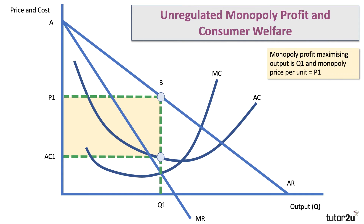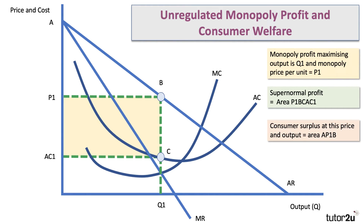Our opening diagram shows a profit-maximising monopolist setting price at P1 with an equilibrium output of Q1. The supernormal profit is shown by the yellow shaded area — the area P1, B, C, A, C1 — quite a large level of supernormal profit above cost. To get top marks for analysis, if you can bring in the concept of consumer surplus, which is a key measure of economic welfare, you can lift your analysis marks to another level. The consumer surplus at the equilibrium price and output is the area A, P1, B — the area underneath the demand curve and above the price charged by the monopolist.